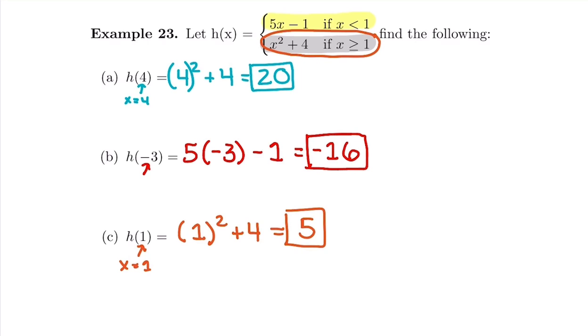Plugging into a piecewise function really just means choosing the correct piece to plug into. There are two different equations, and you pick the correct one based on which x value you're trying to plug in.